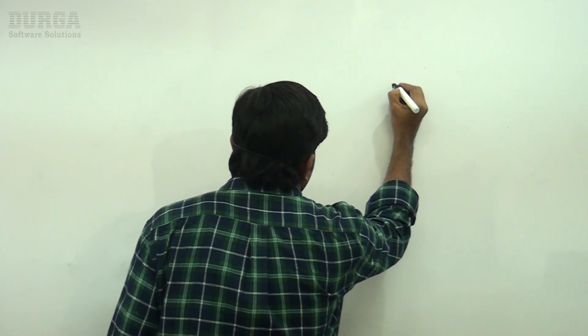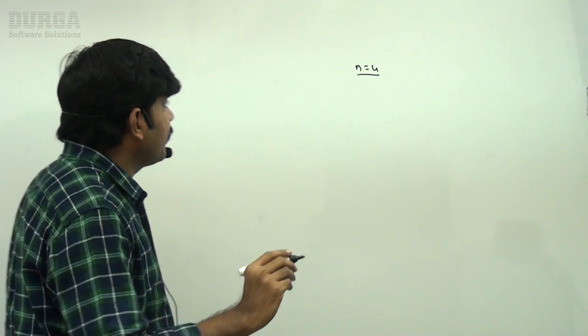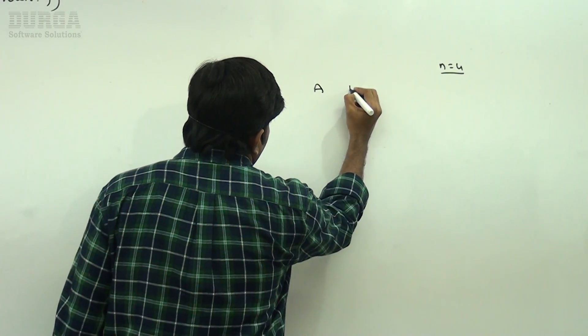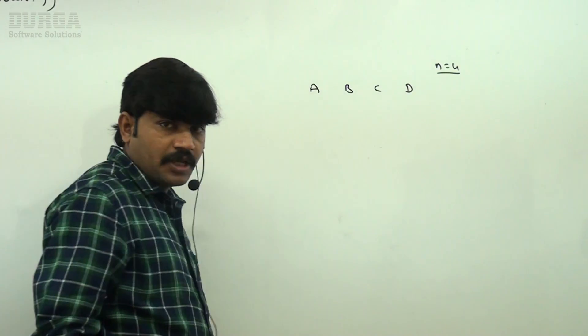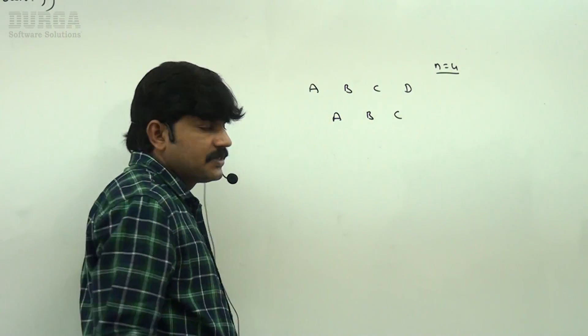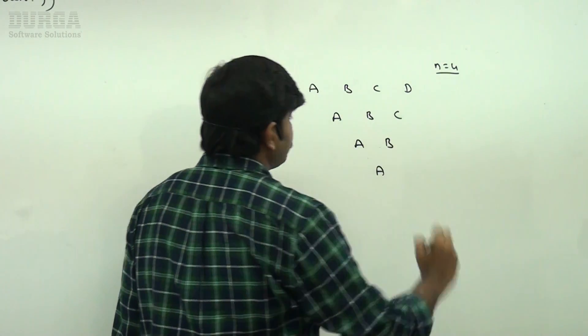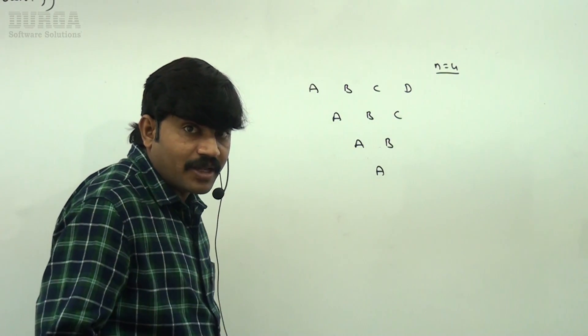The next pattern is Inverted Pyramid with alphabet symbols. Suppose N is equal to 4 — take the first four alphabet symbols: a, b, c, d. The expected pattern is: first row a b c d, second row a b c, third row a b, and last row a. This is the pattern we are expecting using alphabet symbols.